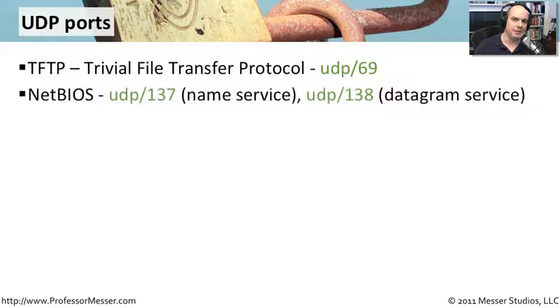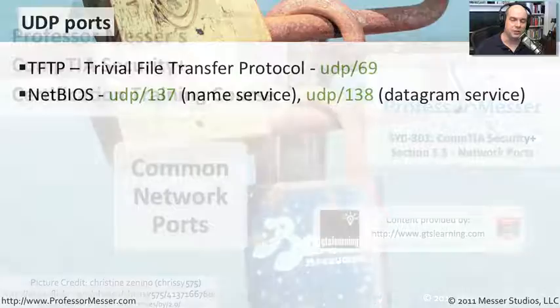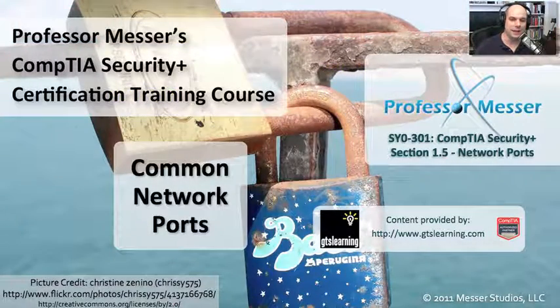And the last one, and you'll certainly run into this one quite a bit, is NetBIOS going over IP, using UDP port 137 to do name services, and UDP port 138 to actually transfer data. We call that a datagram service.